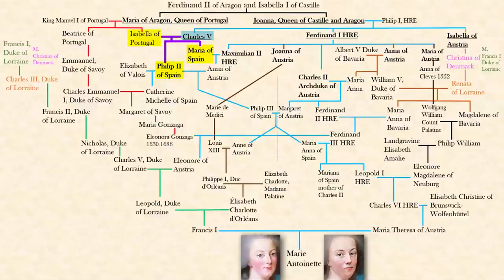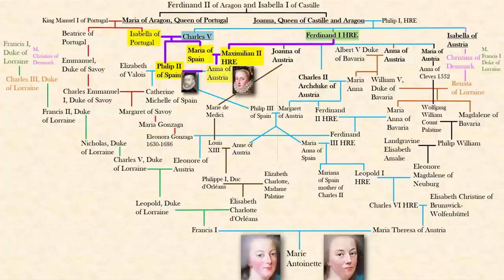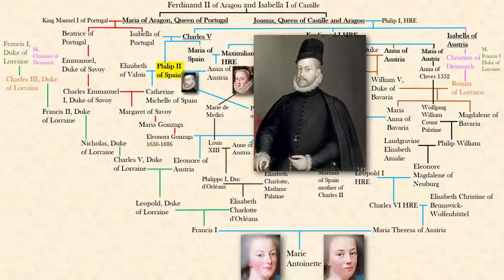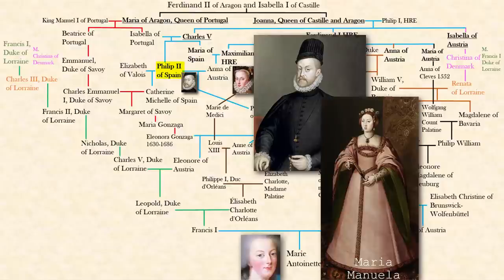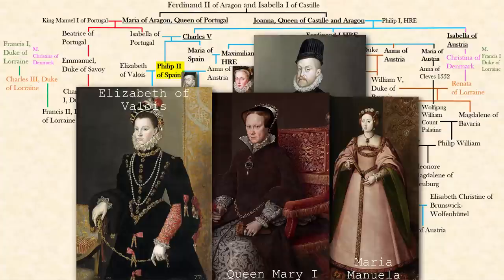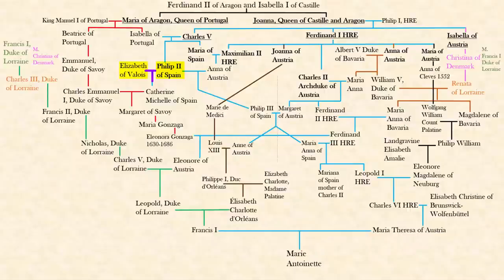Charles V and his cousin-wife Isabella of Portugal had two Spanish kids: Philip II and Maria. Maria married her first cousin Maximilian II, who was Ferdinand II's son. Philip II of Spain married this girl who was his niece and first cousin once removed. Philip II was already a widower — he had three wives before his Spanish niece: a Princess of Portugal, a Princess of England who was Bloody Mary or Mary the First, and Princess of France Elizabeth Valois. With the French princess he had a daughter, Catherine Michelle.